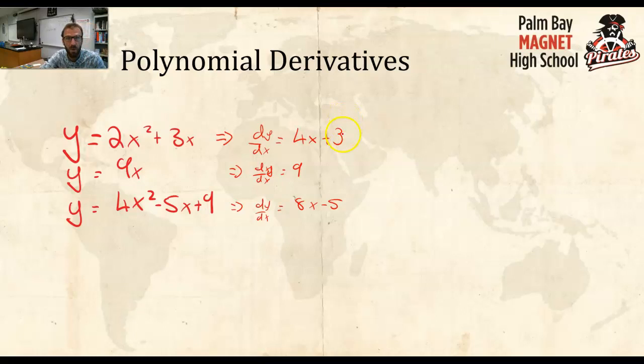And what I wanted to do is I wanted to see if you could find the pattern. Because if you look at it, 2x squared, this whole term became 4x. So what happened? The exponent went down 1. And what the exponent was went out front. In fact, you know what?